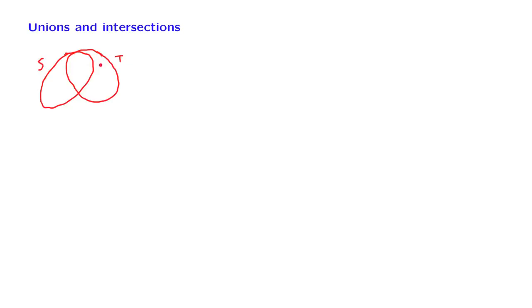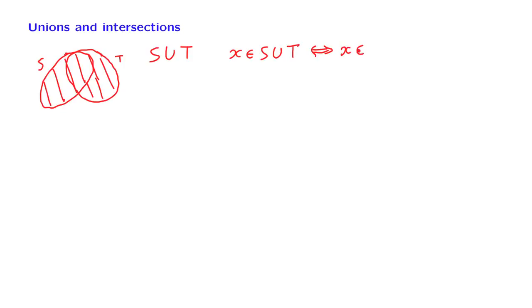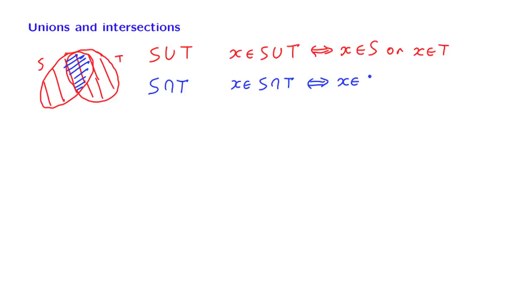When we have two sets, we can talk about their union and their intersection. The union of the two sets consists of all elements that belong to one set or the other, or both. The union is denoted this way, and formally an element belongs to the union if and only if it belongs to one of the sets or the other. We can also form the intersection of two sets, which stands for the collection of elements that belong to both sets. Formally, an element belongs to the intersection if and only if it belongs to both S and T.